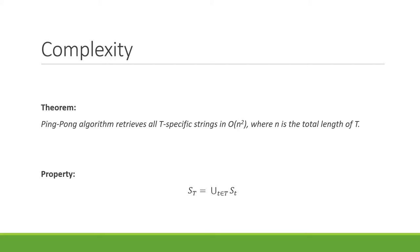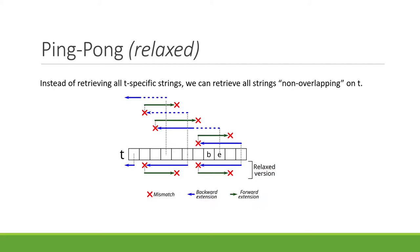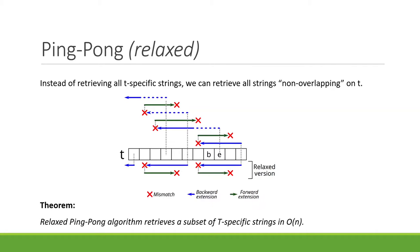In some real scenarios a quadratic complexity is too high, so we also introduce a relaxed version of our algorithm. In the relaxed version, instead of retrieving all t-specific strings, we retrieve only those strings that do not overlap on the string t. In this way we obtain a complexity that is linear in the length of the string. Once we find a specific string, instead of restarting the search from the position before the second mismatch, we restart from the position before the first mismatch. This allows us to compute only t-specific strings that do not overlap on the input string.